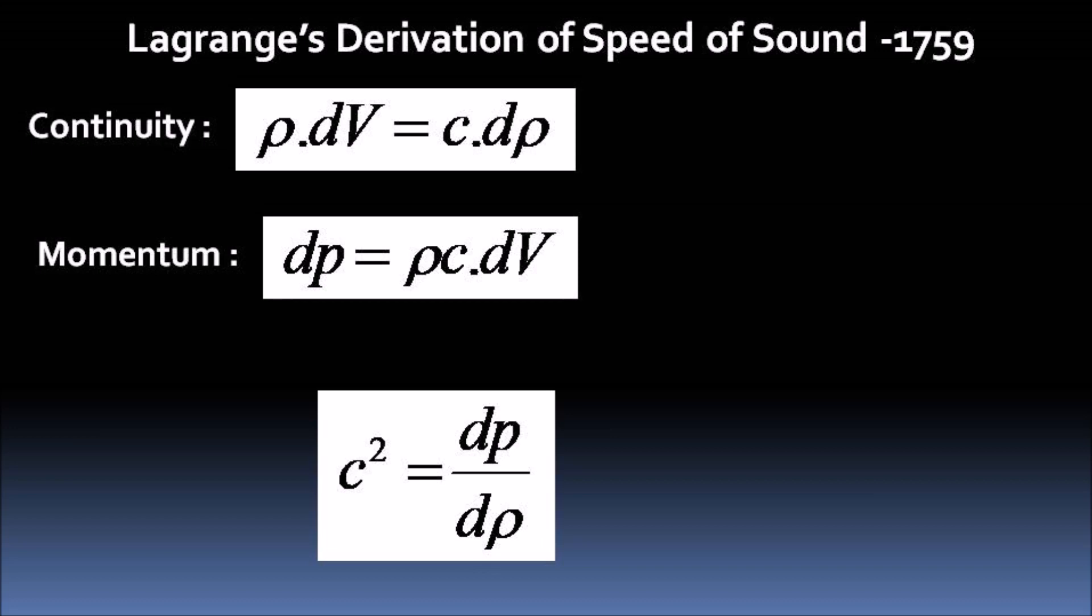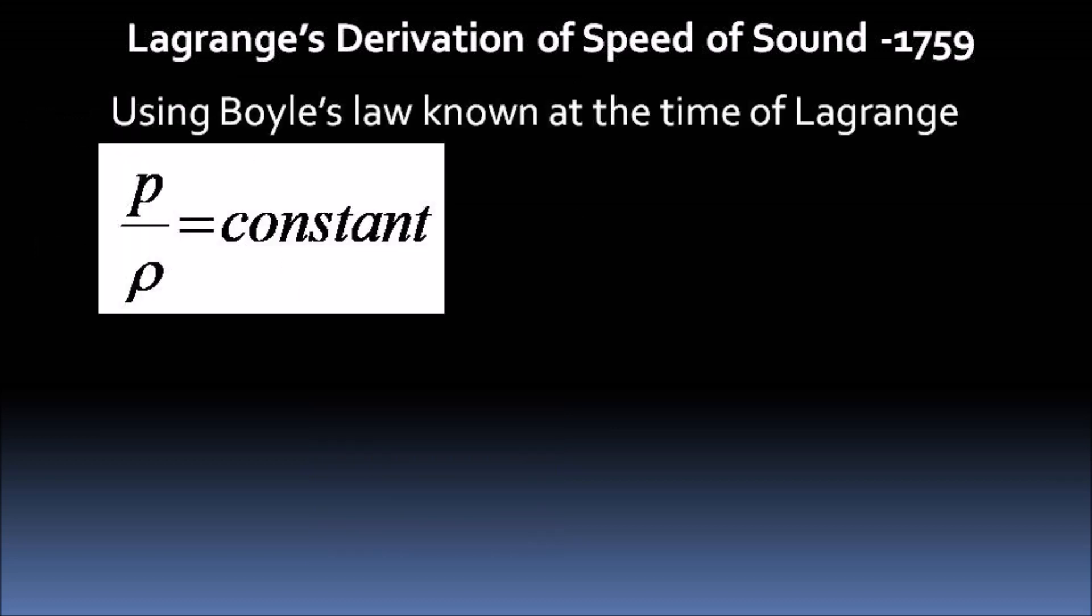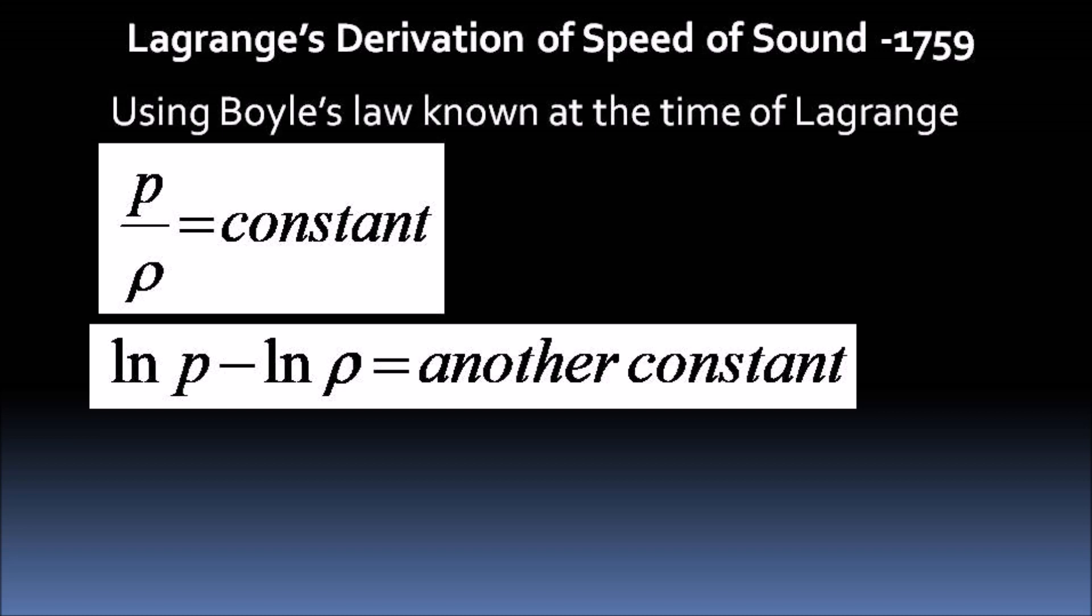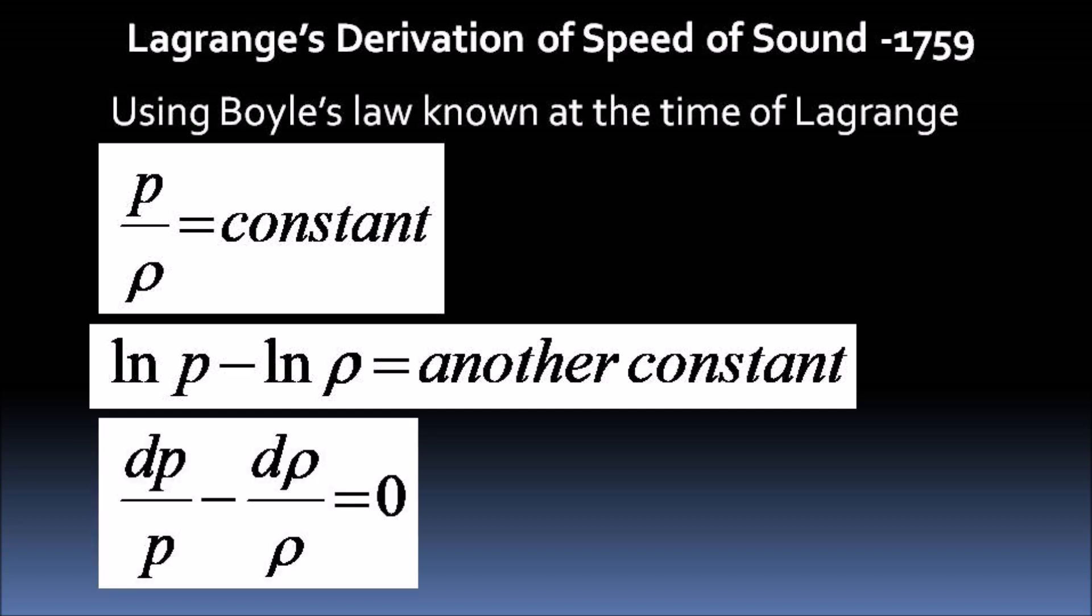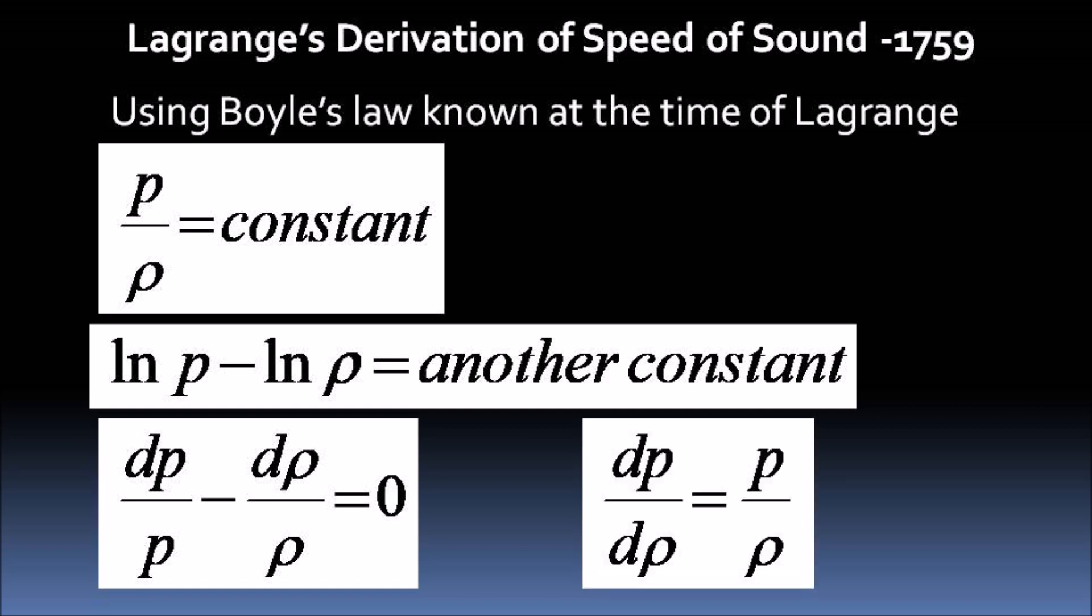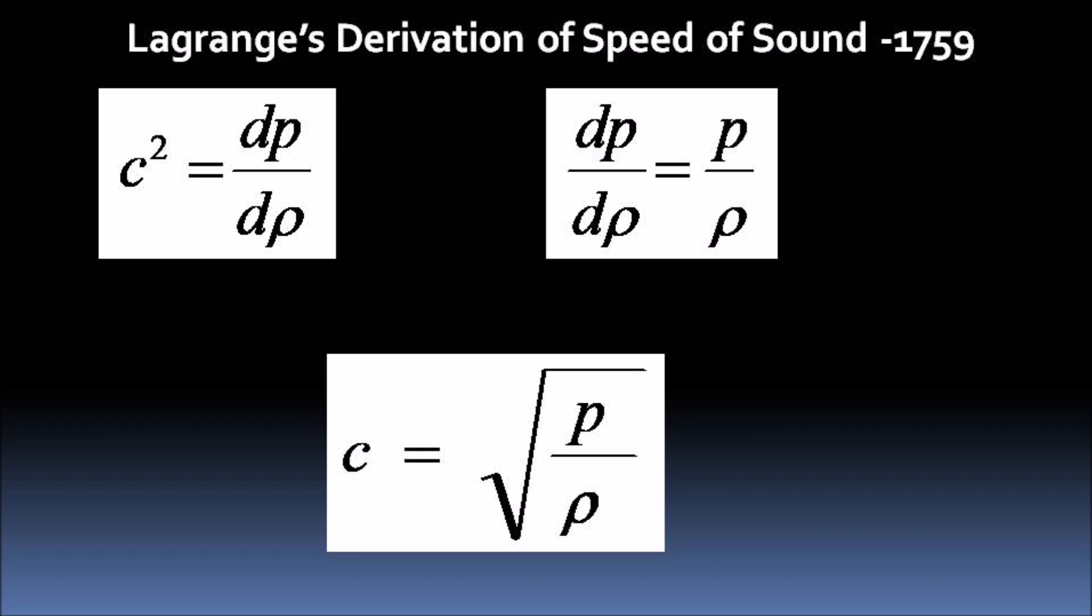This differential expression needs to be expressed in algebraic form. Using Boyle's law known at the time of Lagrange, p by rho is a constant. Taking natural log of both the sides, we get ln p minus ln rho is equal to another constant. Differentiating this expression, we get dp by p minus d rho by rho is equal to 0 or the value of dp by d rho is equal to p by rho. Putting these values, we get an equation for the speed of sound which is same as that obtained by Newton.